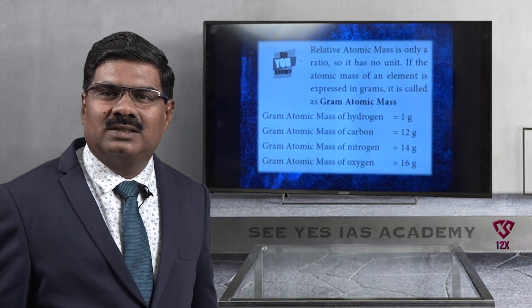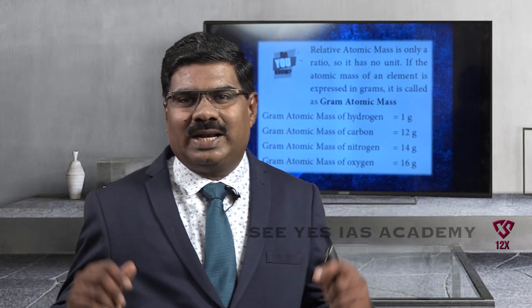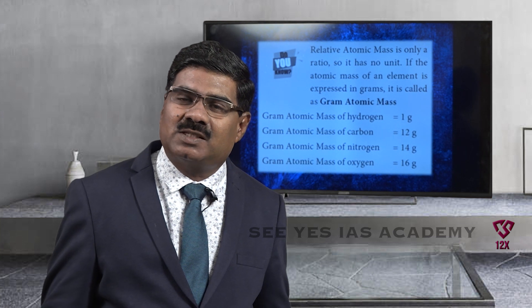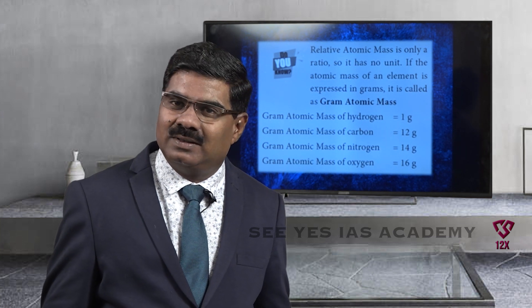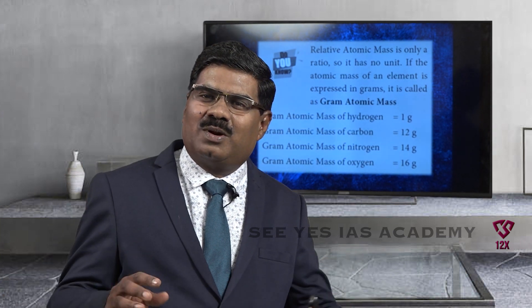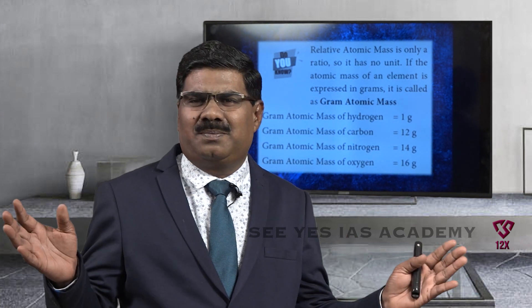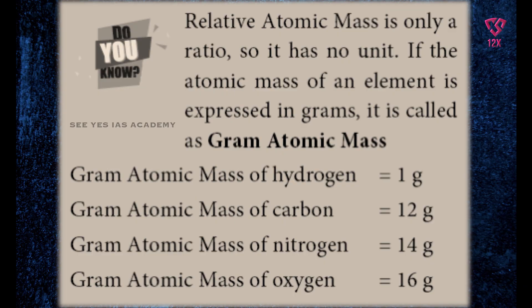Relative atomic mass is only a ratio, so it has no unit. If the atomic mass of an element is expressed in grams, then it is called gram atomic mass. Gram atomic mass of hydrogen is 1 gram, carbon is 12 grams, nitrogen is 14 grams, and oxygen is 16 grams.